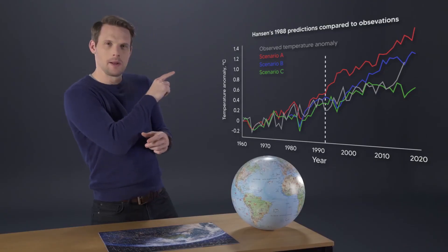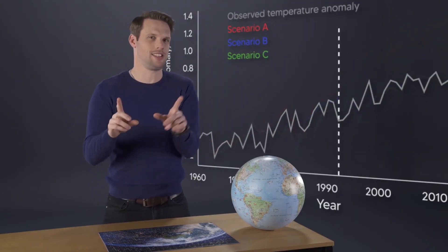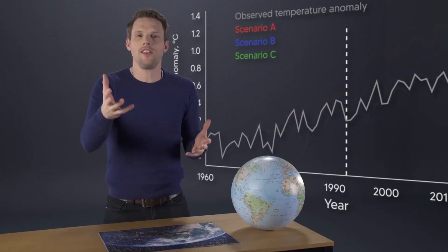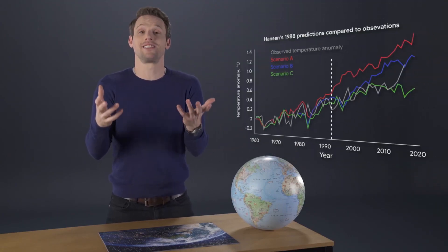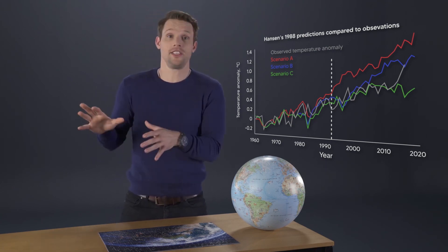One noticeable difference is this dip — the observed temperature in 1992. It was the result of a massive volcanic eruption. In 1991, Mount Pinatubo in the Philippines erupted and caused the Earth's temperature to drop — an event that would have been a little hard to predict even for the best scientists. And what's even more encouraging is that the model from 30 years ago has continued to be improved upon year on year.